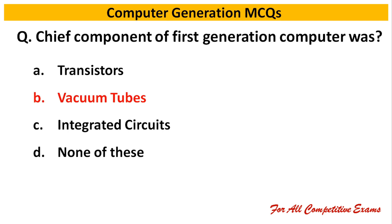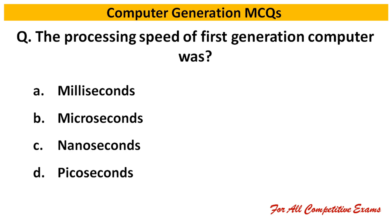Next question: The processing speed of first generation computer was — Right answer is milliseconds.